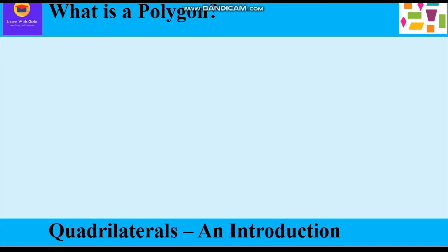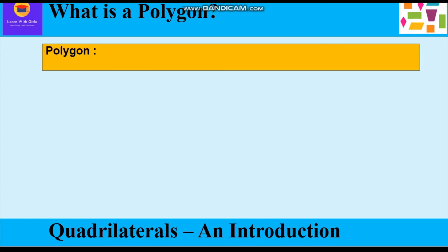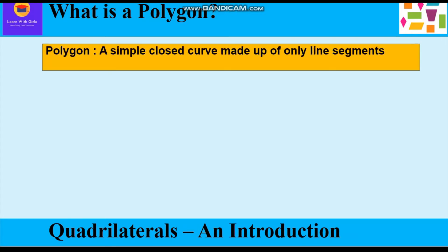Now what is a polygon? A simple closed curve made up of only line segments is called a polygon. That means it should be simple, it should be closed, and it is a curve which is made up of only line segments — then it is called a polygon.